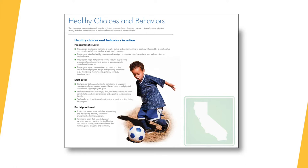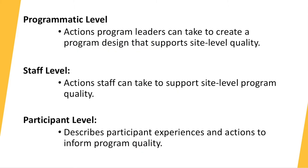The quality standards describe high levels of program quality. Each standard provides a general description and how the standard looks in action at the programmatic, staff, and student levels. The programmatic level describes what a program should look like in practice and the actions program leaders can take to create a program design that supports site-level quality. The staff level describes what staff should be doing each and every day, and the participant level describes participant experiences and actions to inform program quality. While there are 12 quality standards, they're not meant to be siloed — you can have an activity that's active and engaged learning, showcases youth voice and leadership, and incorporates healthy choices and behaviors all at the same time.